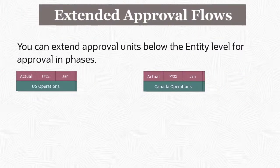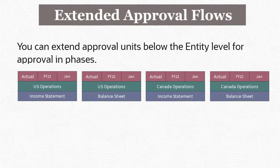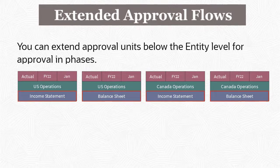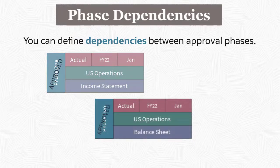You can optionally create an extended approval flow to create approval units with granularity below the entity level, allowing your data to be approved in phases. For example, you could include the account dimension in your approval unit so that income statement data and balance sheet data can be reviewed and approved in separate phases. You can define dependencies between phases — for example, requiring that income statement data must be approved before balance sheet data can be approved.